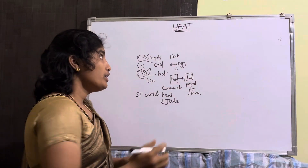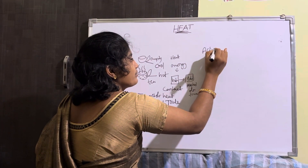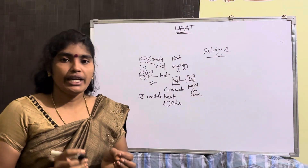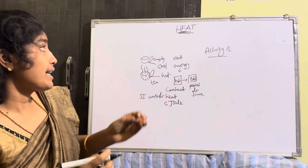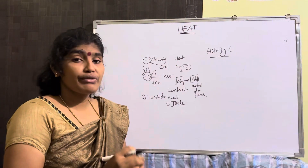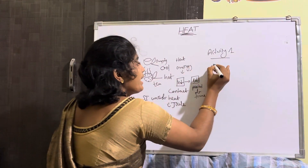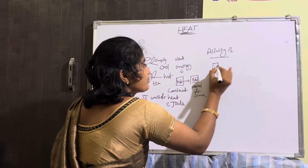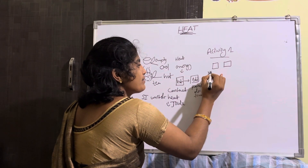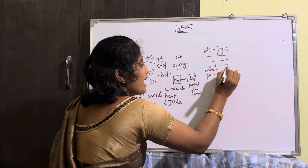In your textbook there is one activity given. If you take two pieces and compare them, you will prove that heat transfers from one body to another body — that is heat in the form of energy. You take two pieces: this is the wooden piece, and this is the iron piece.